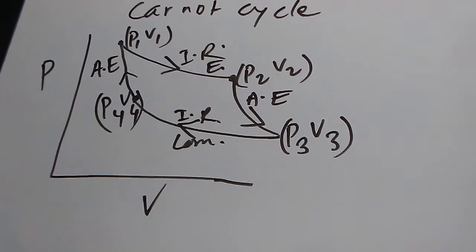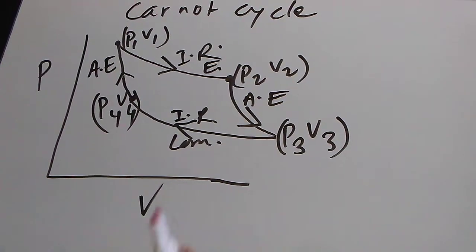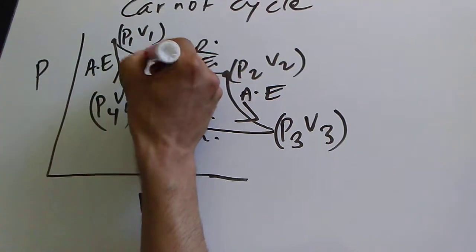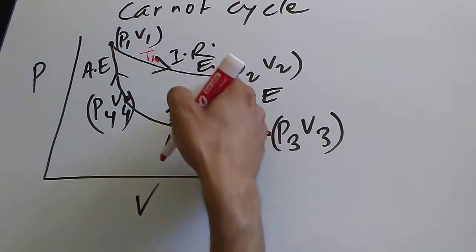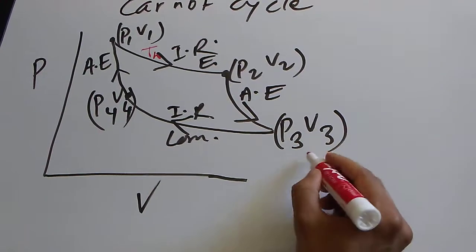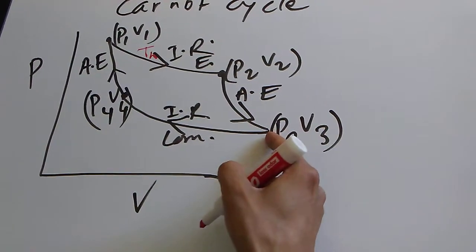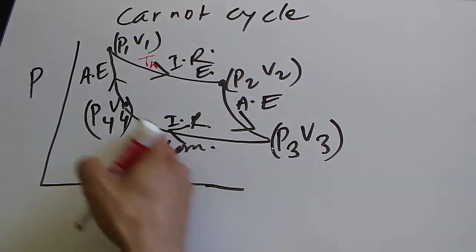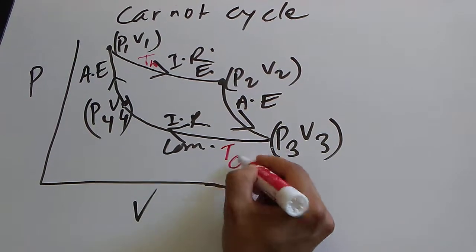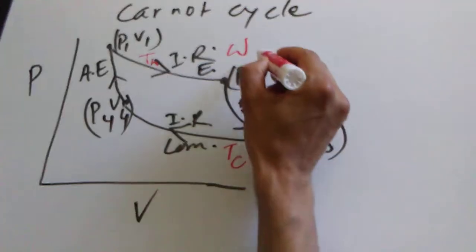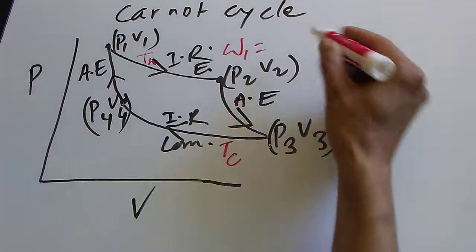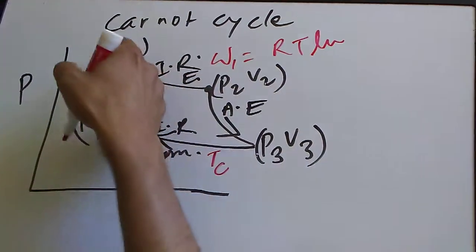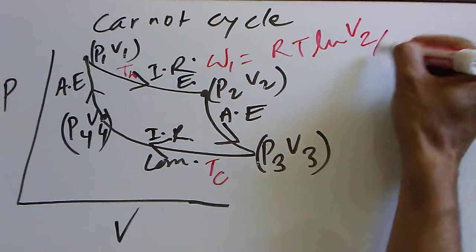So what is the work done? Let's calculate the work done. This curve is at high temperature — let's say this temperature is TH. The work done here, W1, is equal to R·TH·ln(V2/V1).